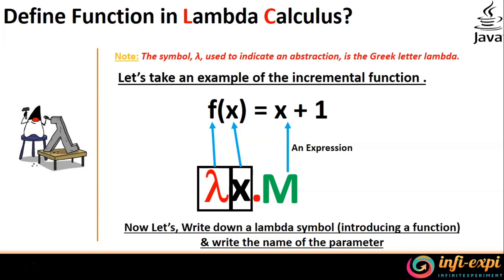The symbol Lambda actually comes from the Greek letter Lambda, which means abstraction — it's used to indicate abstraction in the Greek environment. So Lambda is all about abstraction here. Lambda Calculus abstracts its functionality and its expression.